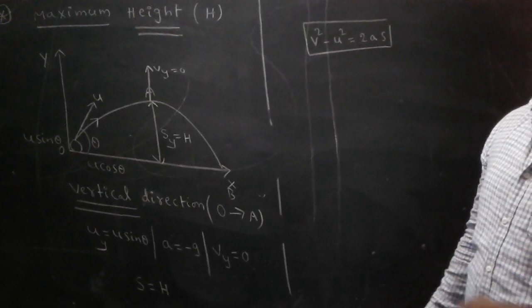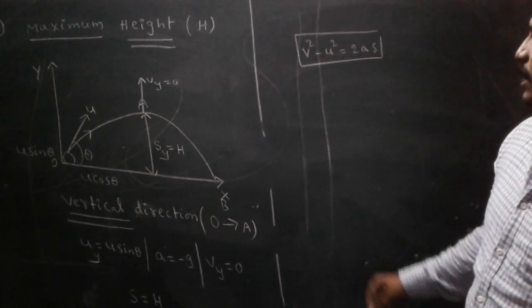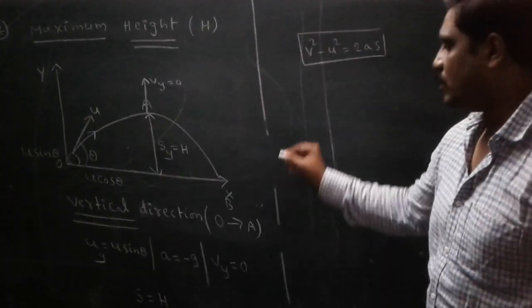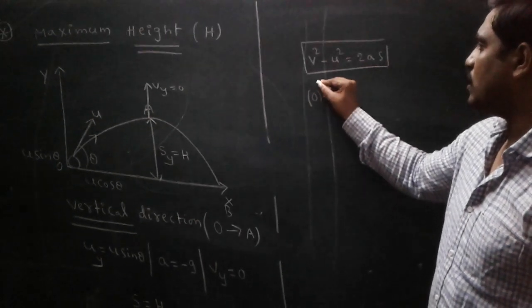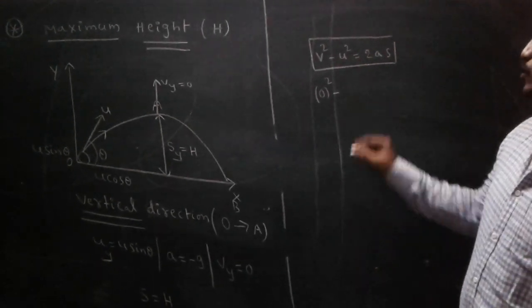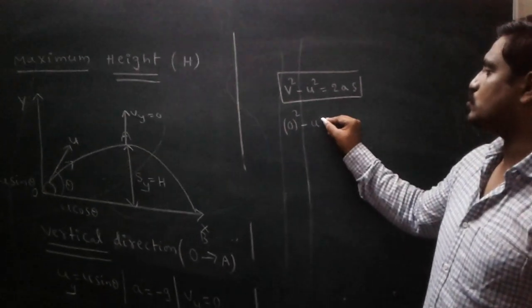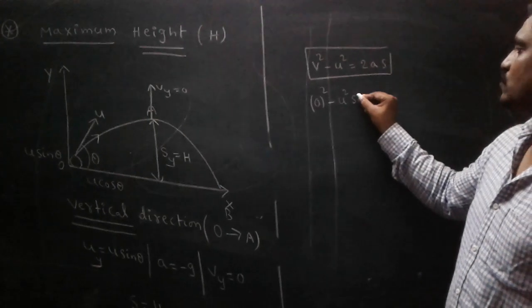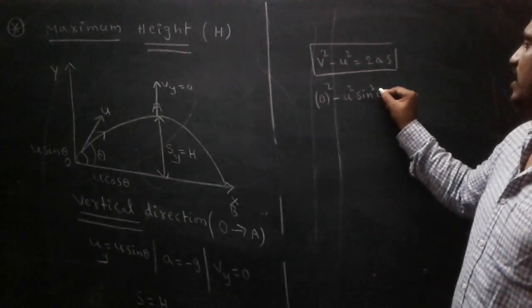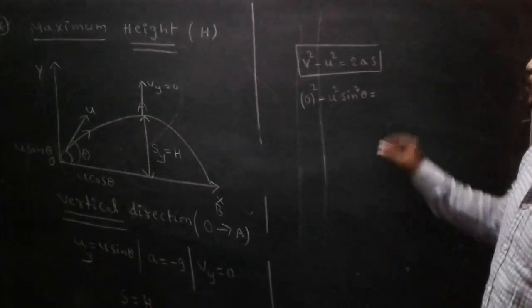This is the kinematic third equation. According to this equation, the final velocity is zero. So 0² - U² where U is U sin θ whole squared: -U² sin² θ = 2